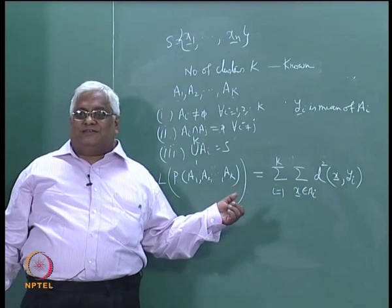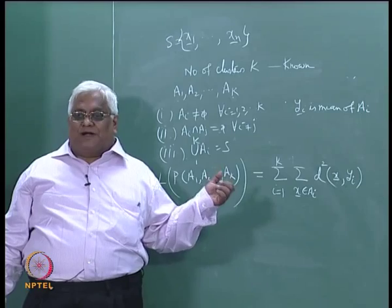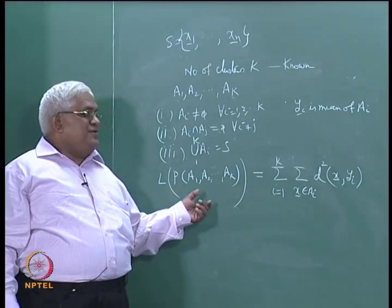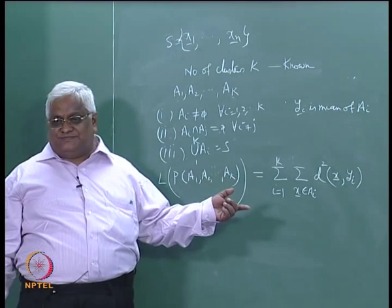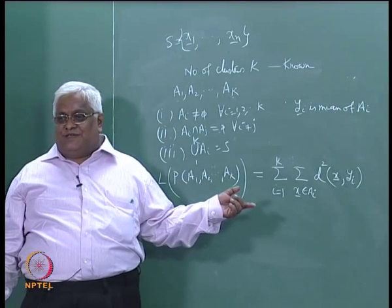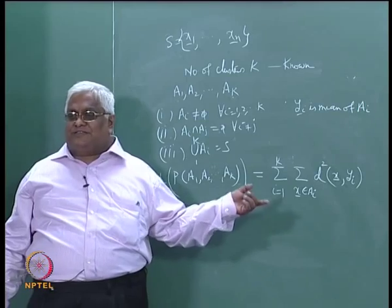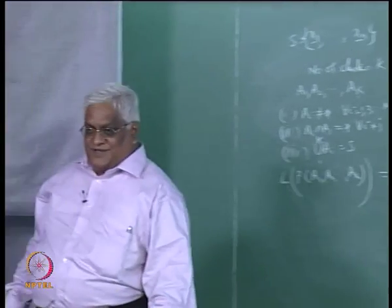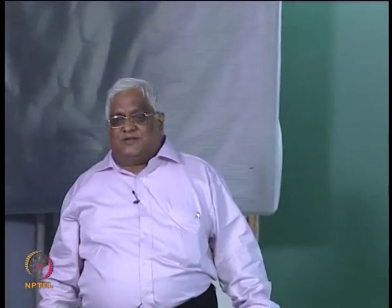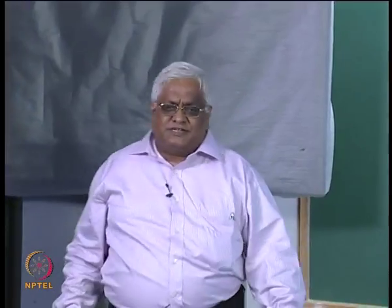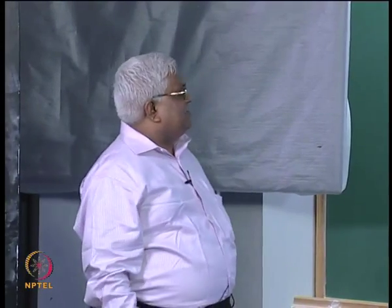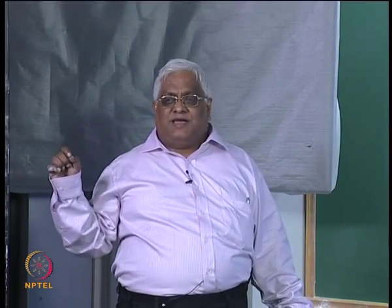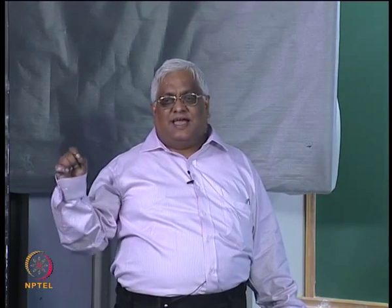Let yi be the mean of ai — you find the mean of all the points in the set. Then you take a point x in ai, find the squared distance between x and the mean yi, sum it over all x in ai, and take i from 1 to k. This is the function L that you define, and you would like to get a partition a1, a2, ..., ak which minimizes L.